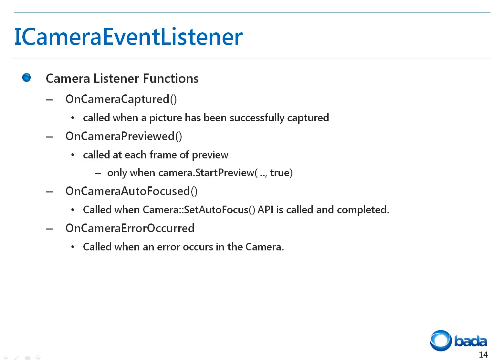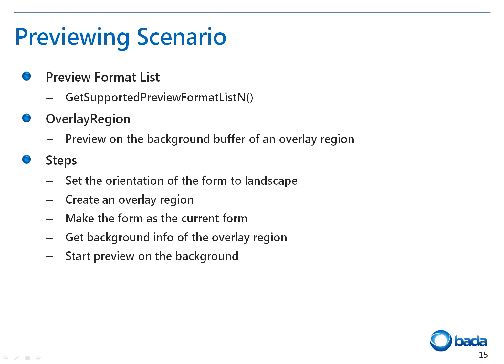The iCameraEventListener interface specifies the methods used to notify the status of the camera and camera events. The camera engine works asynchronously, so it is important to implement this listener to ensure smooth performance. This provides callbacks for events such as image captured, previewed, focused, etc. You can get a list of preview formats supported by the camera by calling the GetSupportedPreviewFormatListN function and selecting one of the formats.